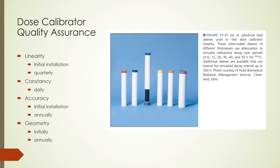At least one sealed source, usually cobalt-57, is assayed, and its measured activity, corrected for decay, must not differ from its measured activity on the date of the last accuracy test by more than 10%. The test for accuracy is done at initial installation and quarterly thereafter, by assaying two or more sealed radioactive sources whose activities are known within 5%. Often cobalt-57 and cesium-137 are the two sources used, and the measured activities must be within 10% of the actual activities. Geometry tests the response of the dose calibrator to different size samples and different sample volumes. If volume effects affect measurements by more than 10%, correction factors must be determined. It is done at initial installation and annually or any time the dose calibrator is moved.